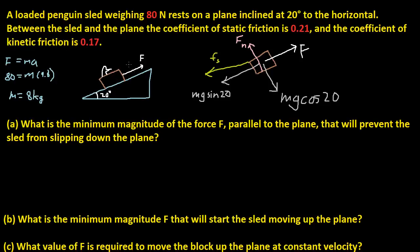Since there are no other forces acting perpendicular to the plane except gravity, we can assume the normal force equals mg cosine 20. If there were a string or aircraft pulling upward even a little, the normal force wouldn't equal that — but for this problem, the normal force equals mg cosine 20.